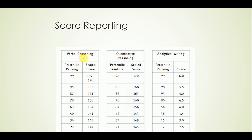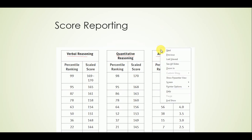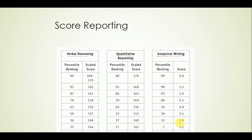Regarding how your scores are reported, the percentile ranks for the Analytical Writing section show that whatever number appears corresponds to how many people scored below that scaled score. For example, if you get a score of 5.5, that means 95 percent of people have scores below 5.5 — in other words, your score is in the top 2 percent of test takers.